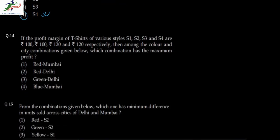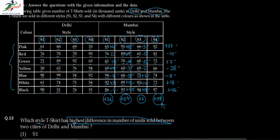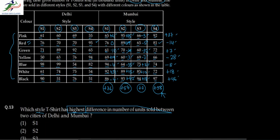Question 2 says: if the profit margin of T-shirts of styles S1, S2, S3, S4 are 100, 100, 120, and 120 respectively, then among the color and city combinations given — Red Mumbai, Red Delhi, Green Delhi, Blue Mumbai — which combination has the maximum profit? We go back to the table to calculate each of these four combinations.